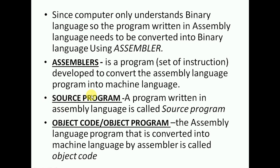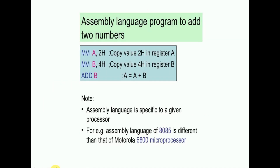Two important terms here: the program you write in assembly language or any language is called the source program. After converting that language into machine language, it is called the object code. This is how an assembly language program looks — for example: MOVE 2h to register A, MOVE 4h to register B, ADD the value of A into register B and store the result — much easier for humans to understand.